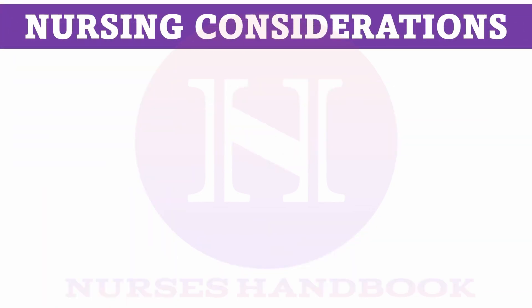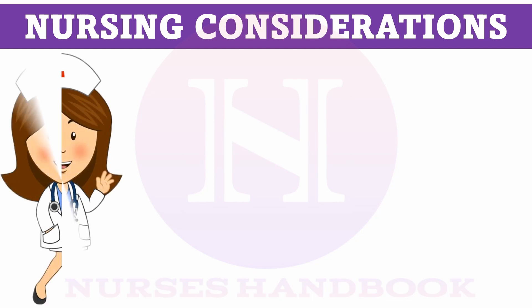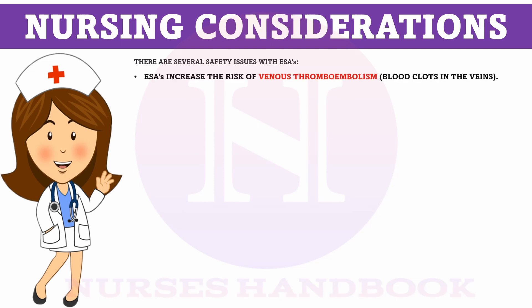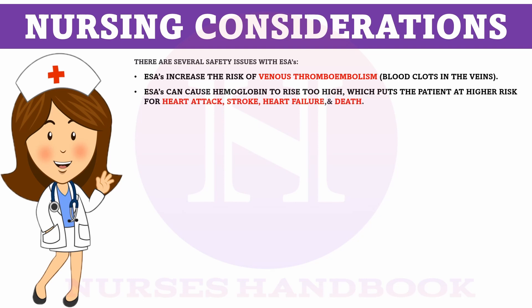Now coming to the most important part — the nursing considerations while giving injection erythropoietin. There are several safety issues with erythropoietin stimulating agents. It increases the risk of venous thromboembolism, so always look for symptoms like leg pain, tenderness of the thigh or calf, shortness of breath, rapid breathing, and chest pain. Monitor hemoglobin levels, as a rapid rise of hemoglobin may cause heart attack, stroke, heart failure, and death in some patients.